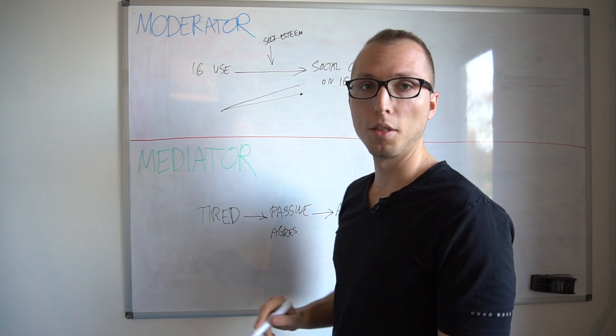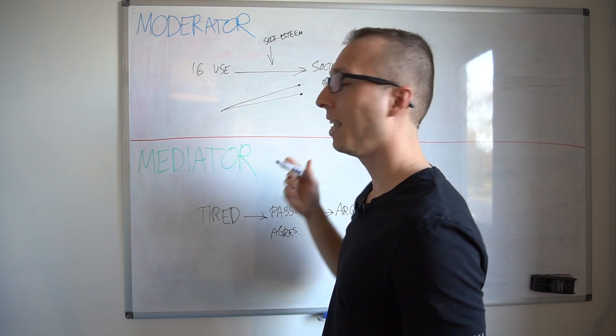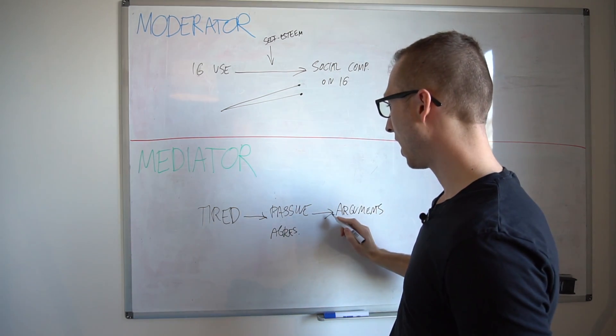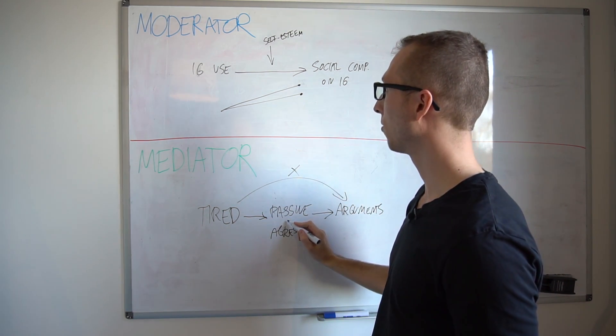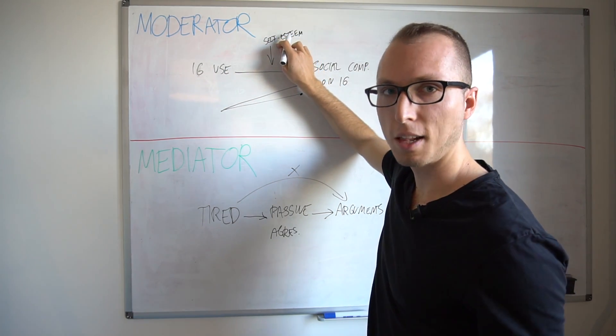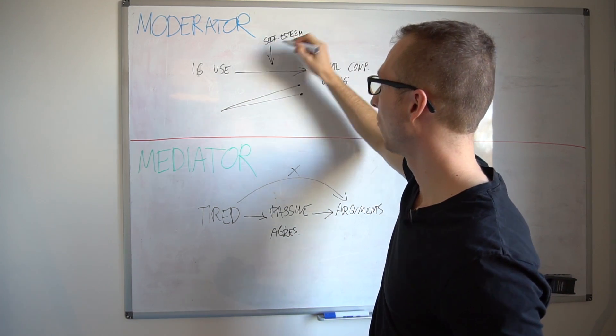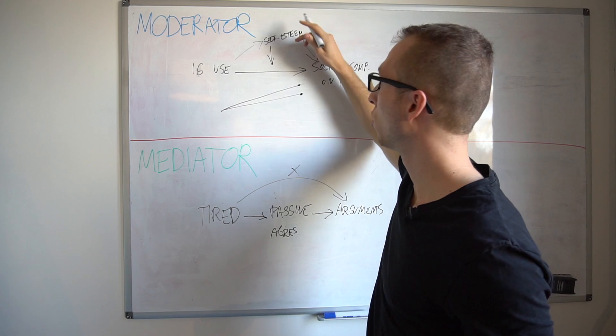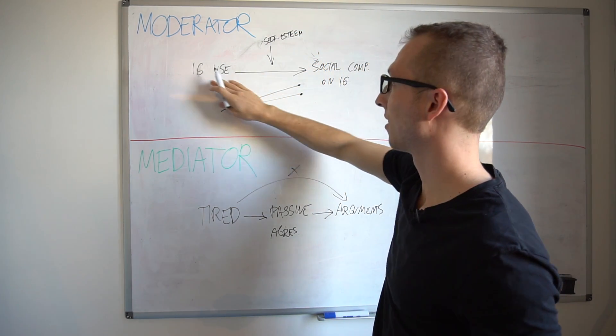So this relationship is influenced, and here it's not a direct way—this is not the case. It depends on this factor. And here it's not the case that Instagram use leads to a form of self-esteem which then leads to social comparison. No, that would be a mediator variable. Then self-esteem would be a mediator, but that's not true. It's not in between—it's just about the relationship and the effect size that Instagram use has on social comparison.